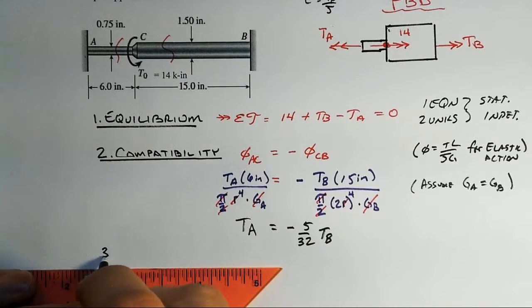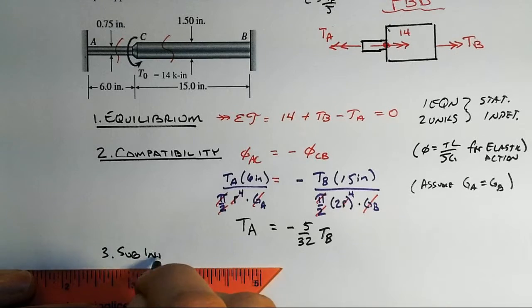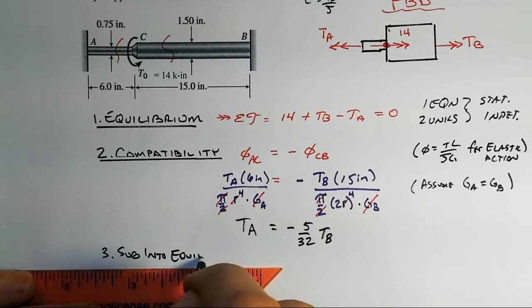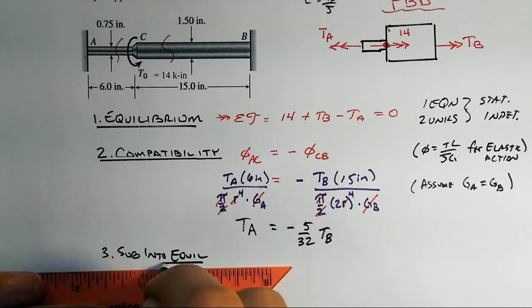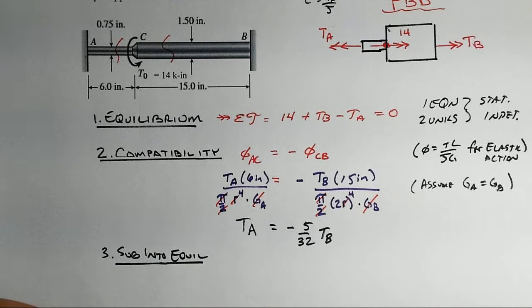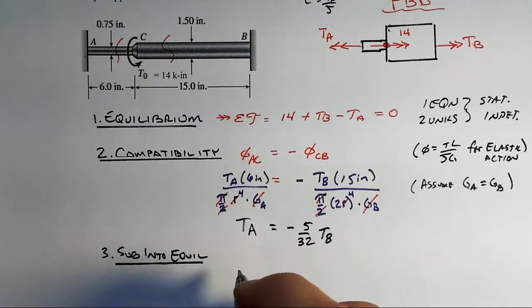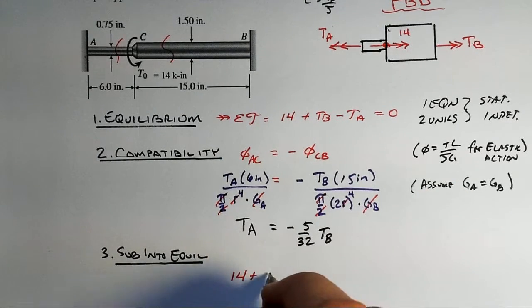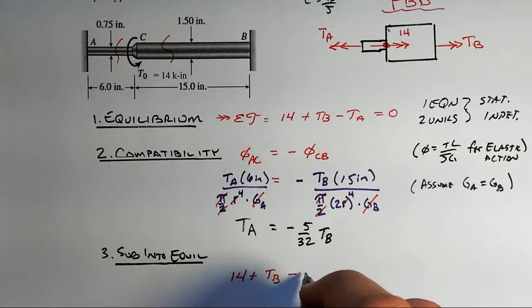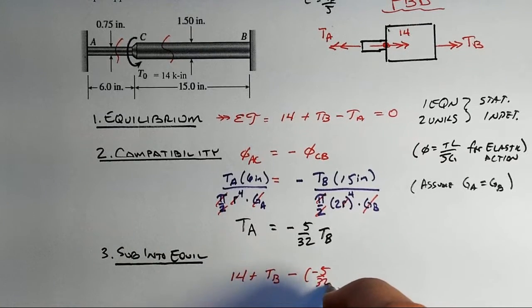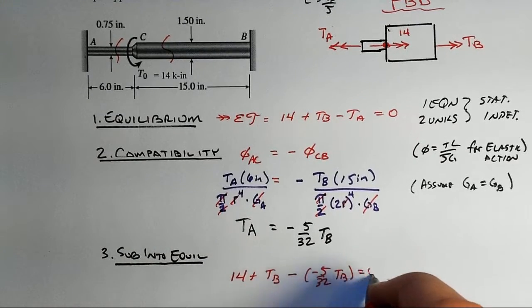Alright, now we can sub into our equilibrium equation because now we have one more equation than we had before. We got through the displacement situation, and so that's what's enabling us now to put this back up into here. 14 plus TB minus 5 over 32 TB equal to 0.